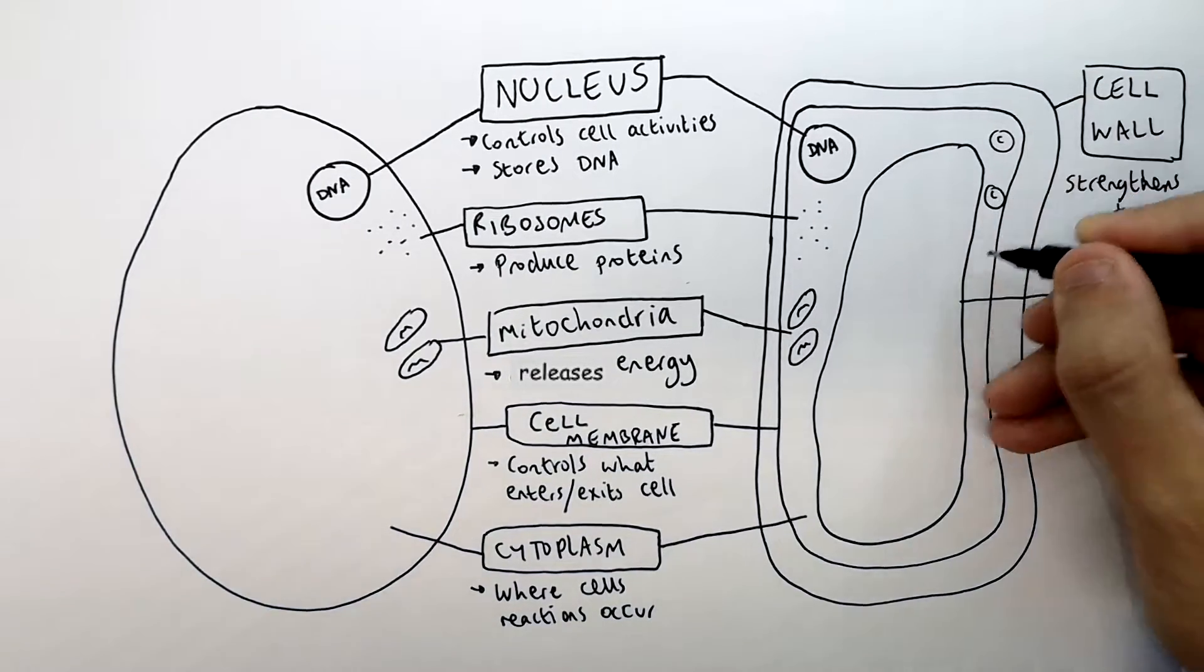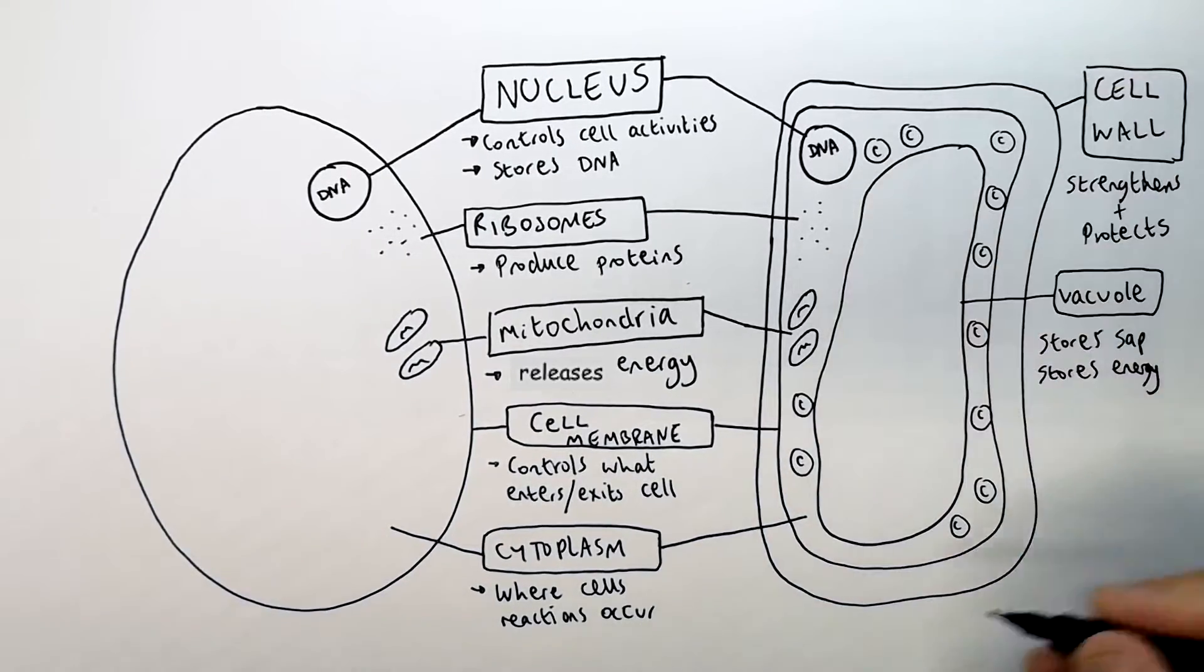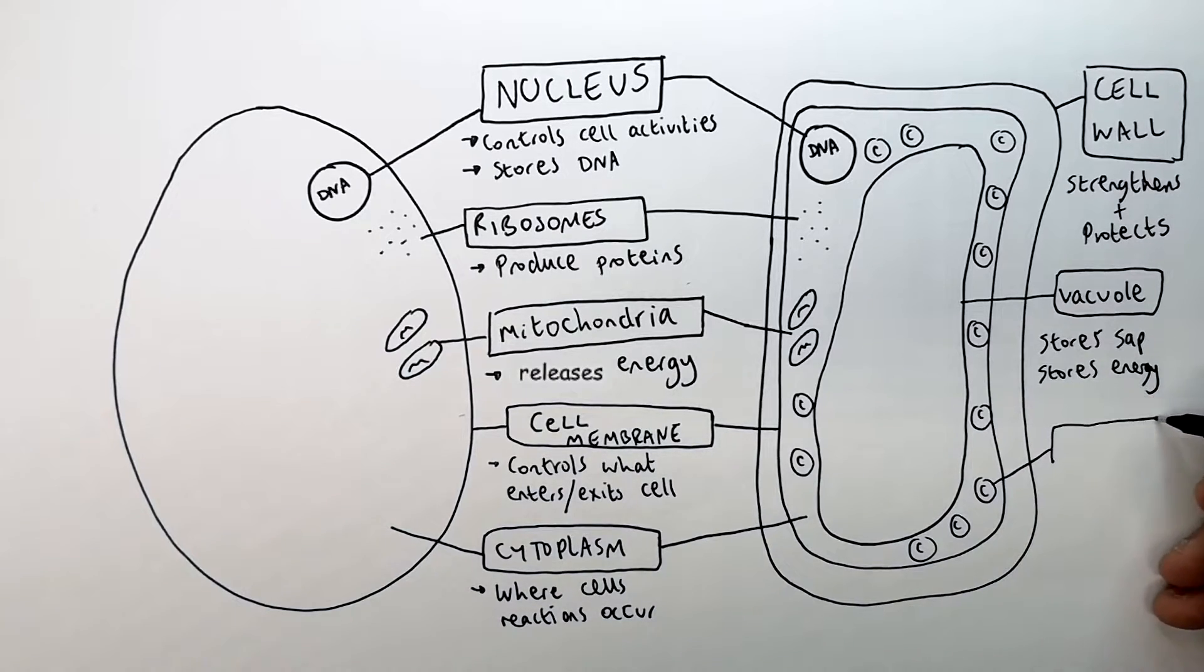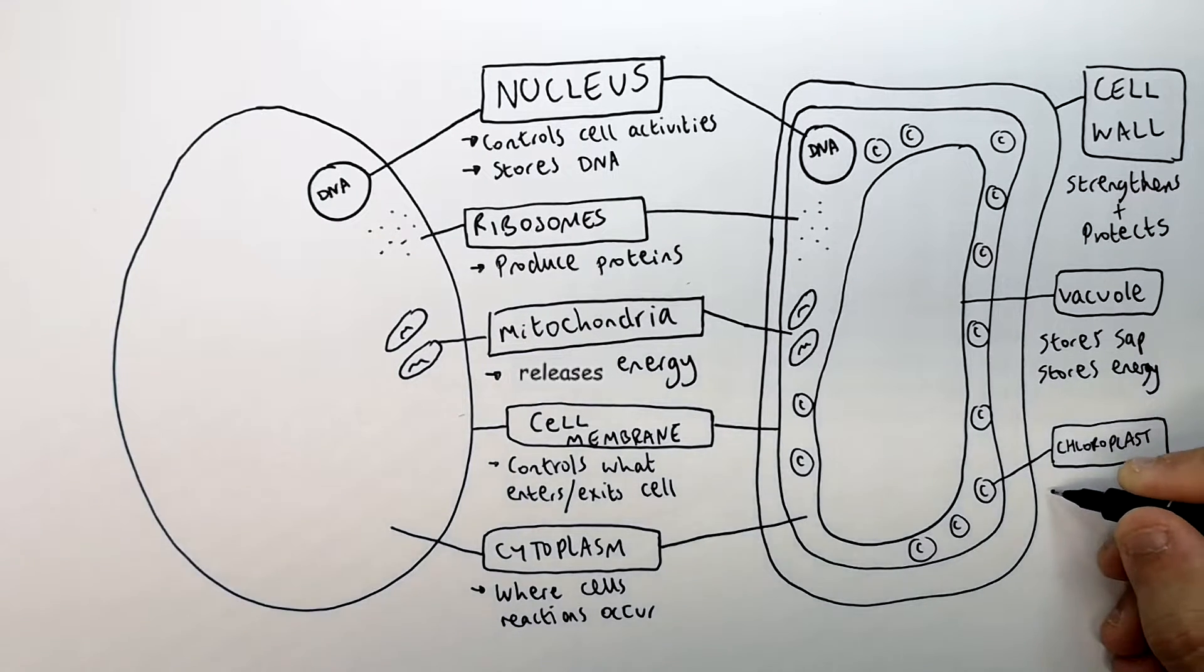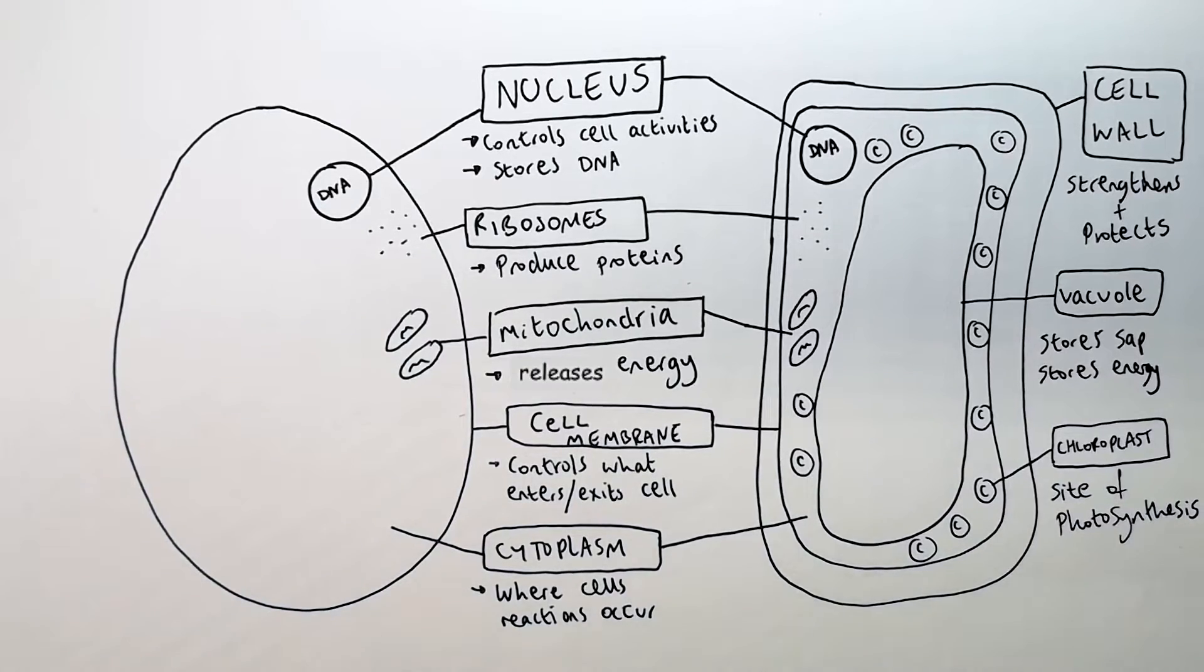The last one is the chloroplasts. I'm now drawing the chloroplasts. Chloroplasts are in plant cells, not in animal cells. The chloroplasts, along with the vacuole and cell wall, are in plant cells. Chloroplasts are the site of photosynthesis.